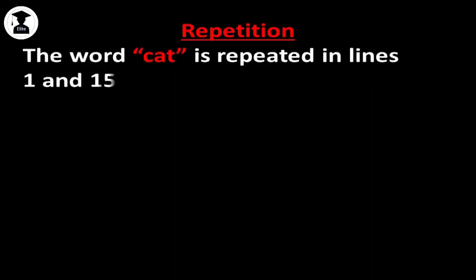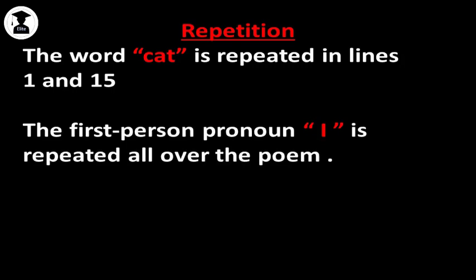Repetition is another sound device used by Linda Hogan in her poem Predators. The word cat is repeated in lines one and fifteen. And the first person pronoun I is repeated all over the poem because this poem is narrated from the first person point of view, first person perspective.